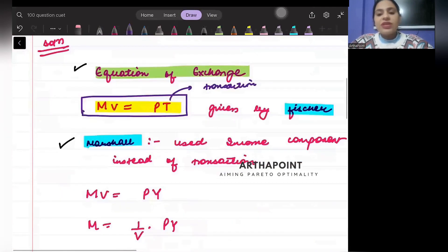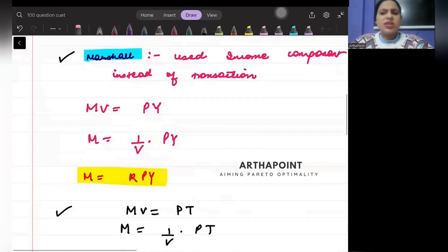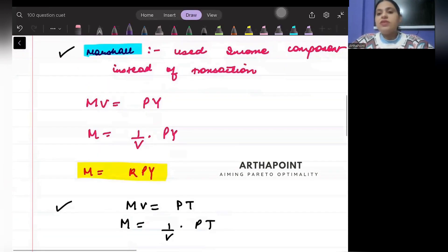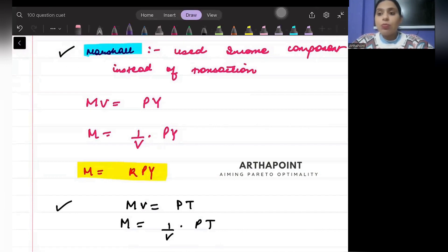Now after he talked about T, Marshall said that it is very difficult to measure transactions. So what he did is he replaced the transaction with the income component, with the output component.